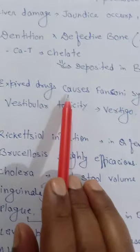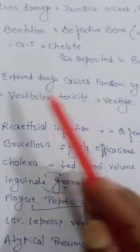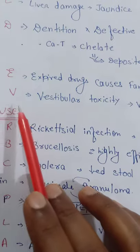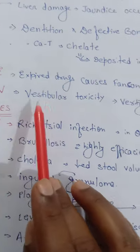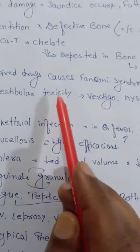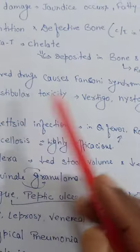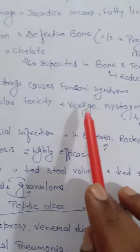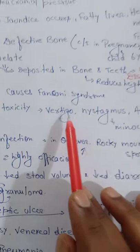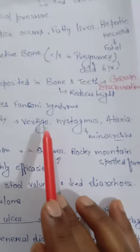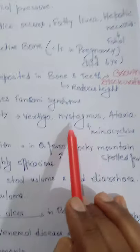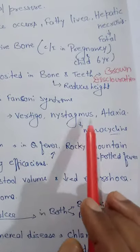E for expiry drugs that cause Fanconi syndrome. V for vestibular toxicity, leading to vertigo, nystagmus, and ataxia. Nystagmus is most commonly caused by minocycline.